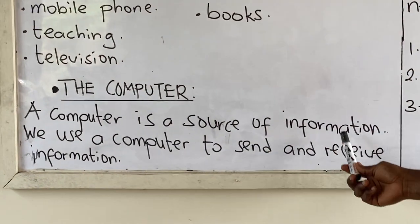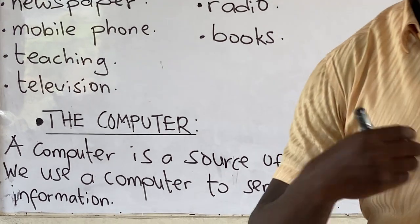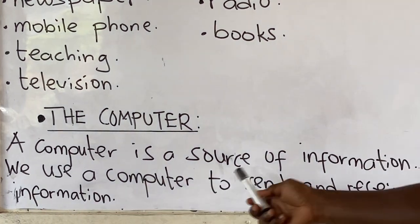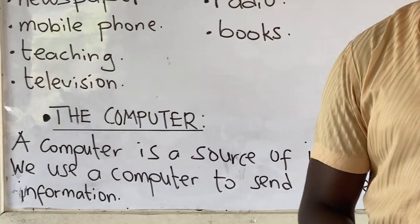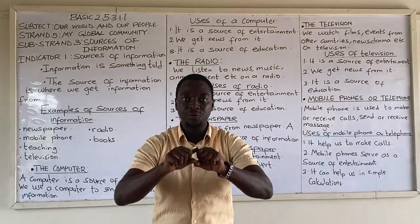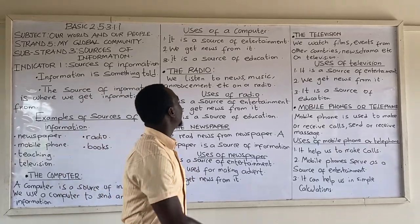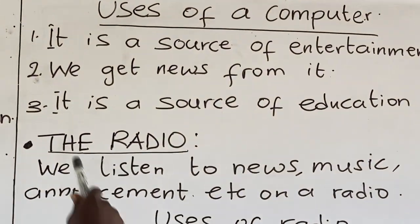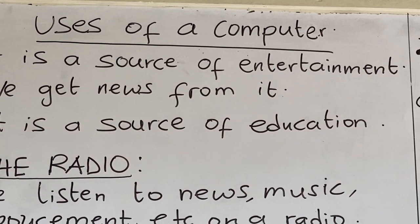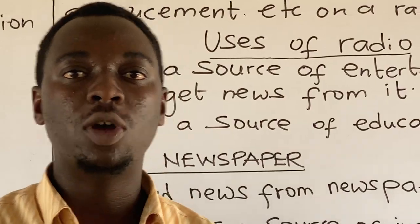A computer is a source of information. We get information from the computer. We use a computer to send and receive information. Let's look at the uses of a computer. One: it is a source of entertainment. We do watch video plays, listen to music, and watch funny clips on the computer, which makes it a source of entertainment.